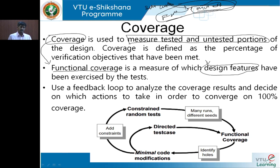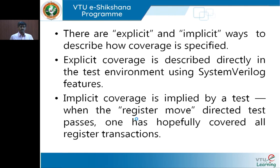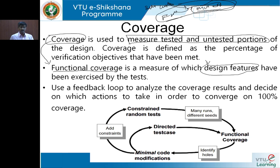Functional coverage can be exercised by different test processes, vector processes, and stimulus processes. All my bug finding will go on with these constraint parameters or values. We will use a feedback loop which does this analysis — the feedback is a very good process. We are looking at that feedback loop to analyze the whole measurement done for functional coverage, to decide what actions need to be taken in order to achieve 100 percent coverage values.